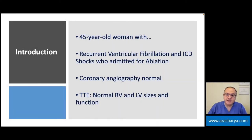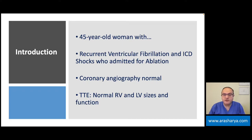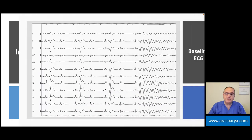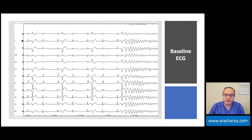Today's ECG belongs to a 45-year-old woman with an ICD who was admitted to our hospital because of recurrent ventricular fibrillation and ICD shocks for emergency treatment. In her past medical history, coronary angiography was normal and echocardiography showed normal RV and LV sizes and function. In the next picture we will see her ECG.